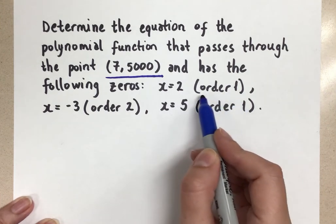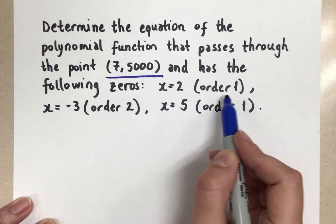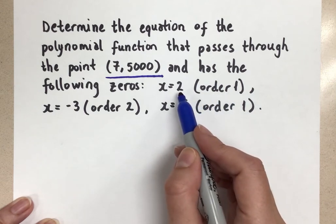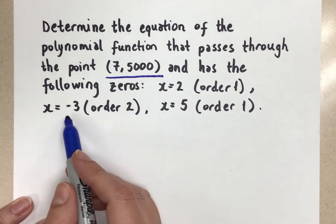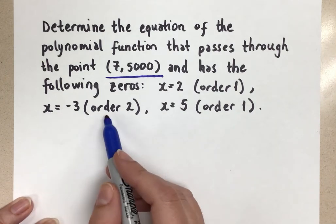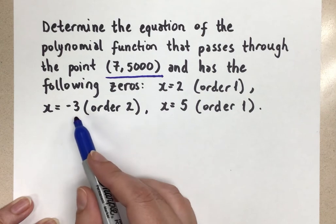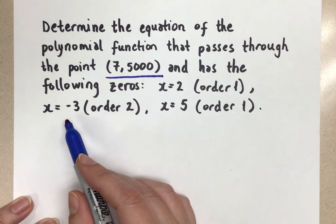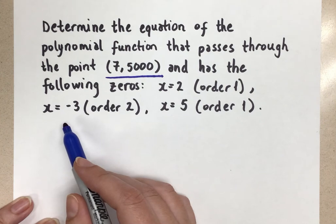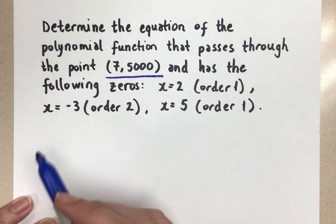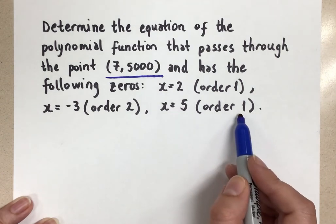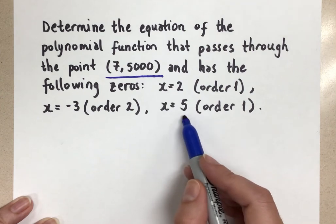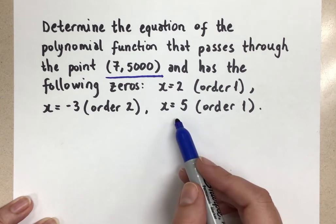so that's a single zero. That means the behavior of the function at that zero is linear. It goes straight through the x-axis. We have this zero, x equals negative 3, and it has an order of 2. That means this zero here is a double, and at the x-axis it has a bounce or that parabolic shape. And then this is another zero of order 1, which means it's just a single, and it just goes straight through the x-axis at x equals 5.